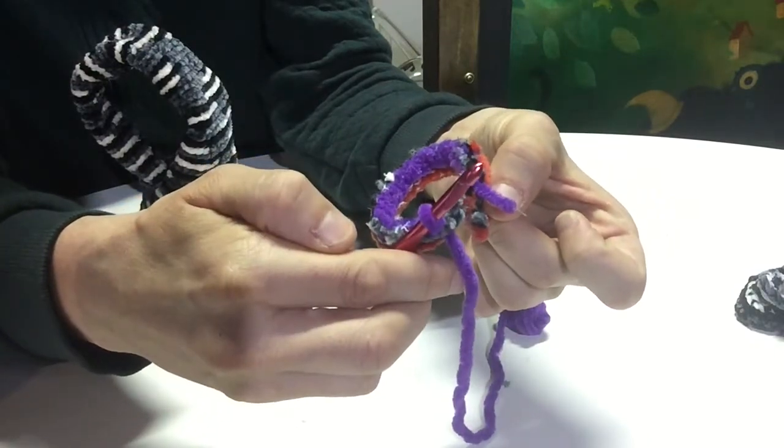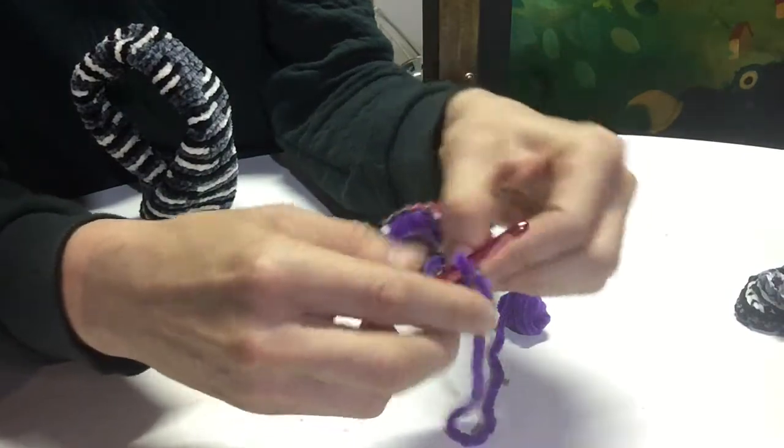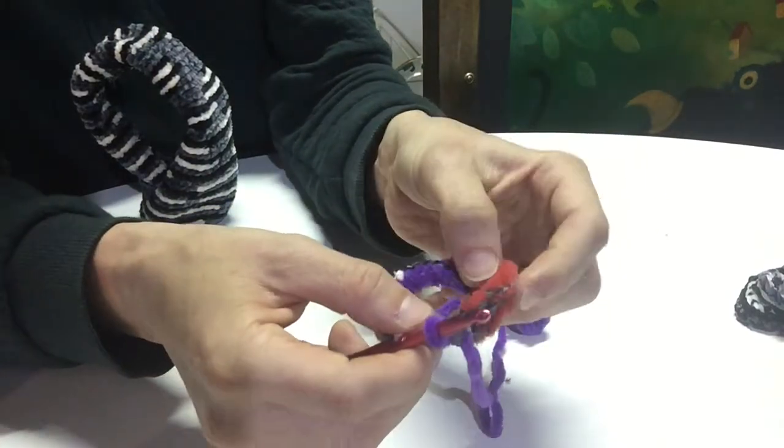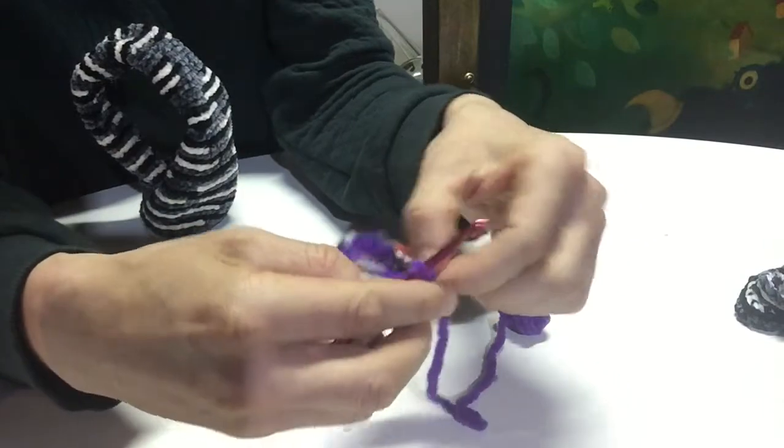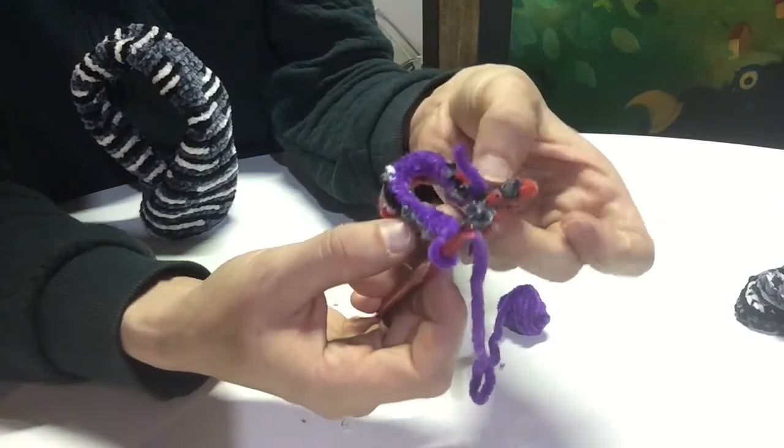If I continue on the side that has purple, it'll just be a circle. So what I have to be careful to do now is connect it to the side that doesn't have purple.